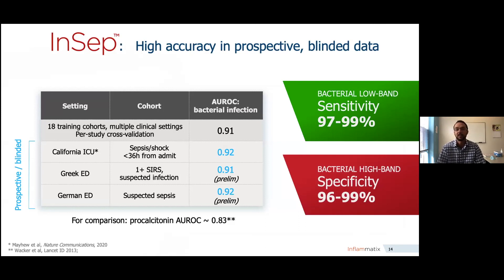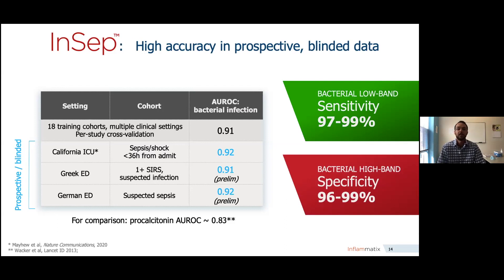InCept has been tested in multiple prospective blinded studies. Here we have some data most recently published in Nature Communications. On the top row, you see 18 training cohorts — InCept had an AUROC, or area under the receiver operating characteristic curve, of 0.91, which translated to a sensitivity of around 97% and a specificity of around 97%. We've also shown, in preliminary data, three external blind cohorts that upheld that same AUROC: an ICU in California, an emergency department in Greece, and an emergency department in Germany — across a wide range of severities, from just one SIRS criteria to full septic shock in the ICU — each confirming sensitivity and specificity between 97% and 99%. For comparison, procalcitonin's AUROC is about 0.83 in repeated meta-analyses.